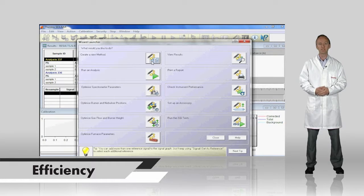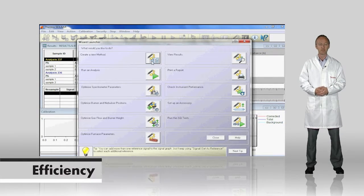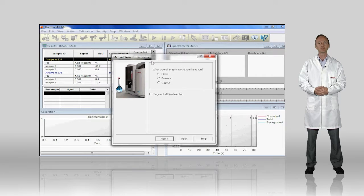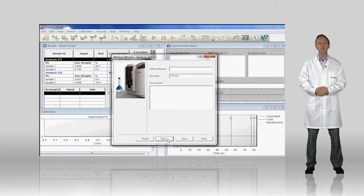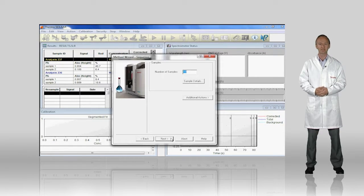Poor instrument efficiency must surely be one of the most significant impacts to lab profits. The key factors in making an analyzer truly efficient are speed and automation. With the built-in Solar software, the ICE 3000 series AAs require minimal time for method development, freeing up valuable analysis time.